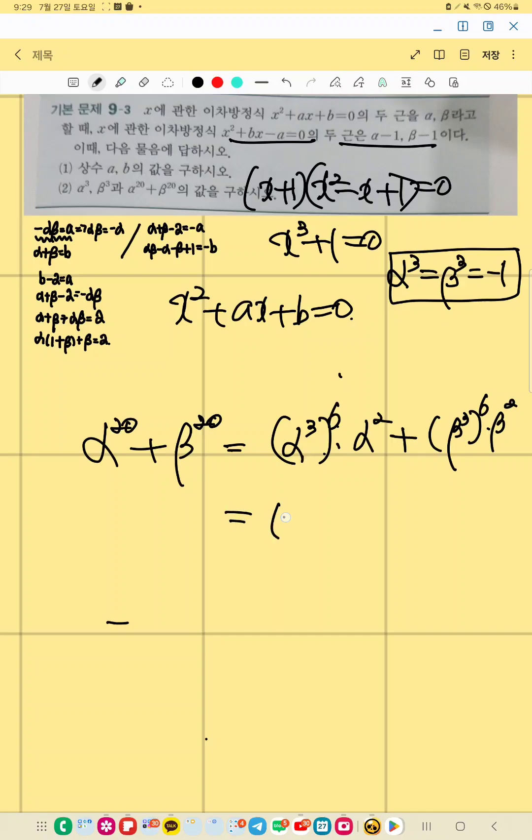This is negative 1. This is also negative 1 to the even numbers. We get alpha square and beta square, right? This is alpha plus beta squared minus 2 alpha beta. So what is alpha plus beta?